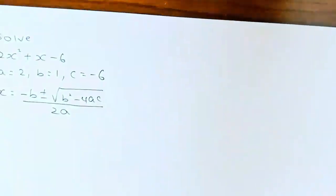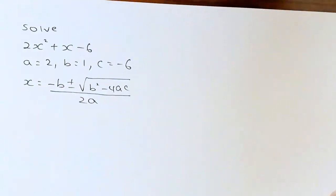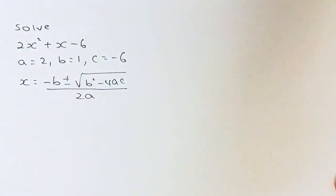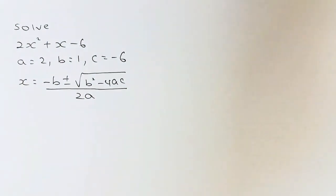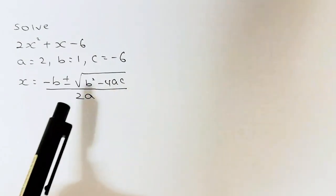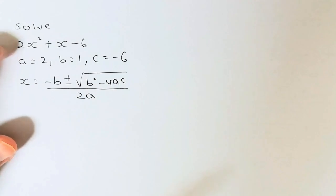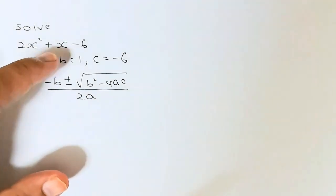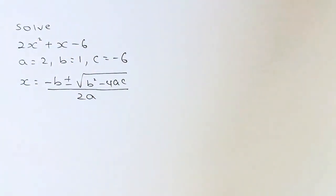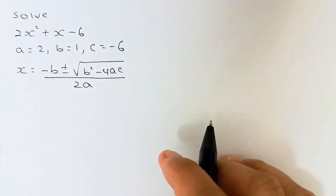We should do a second example now. The second example is slightly more difficult but still manageable. The question is 2x squared plus x minus 6. Using the quadratic formula, we identify a, b and c: a is 2, b is 1, and c is negative 6.